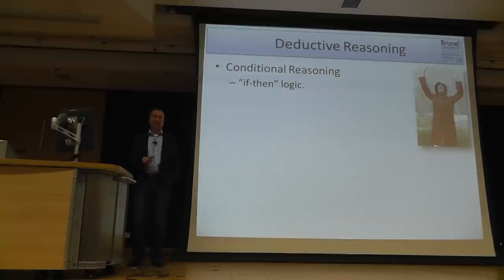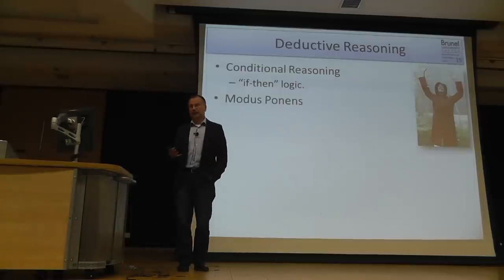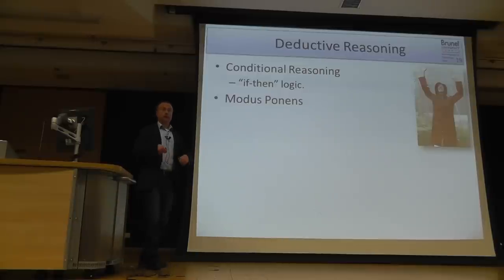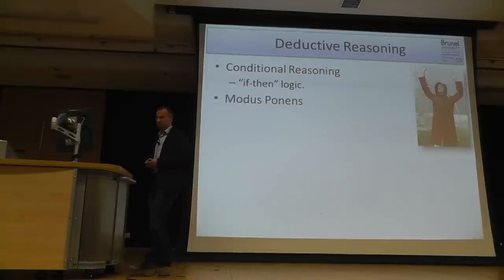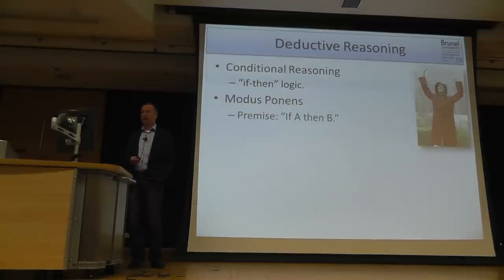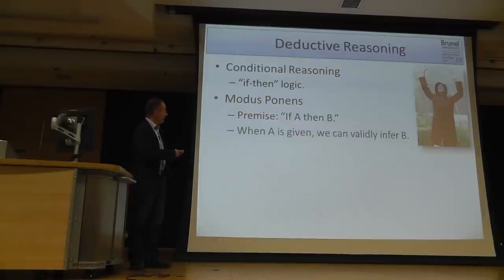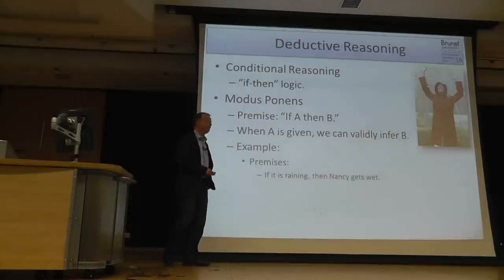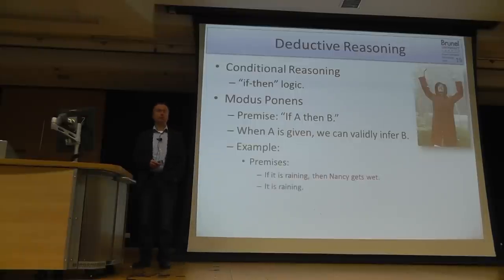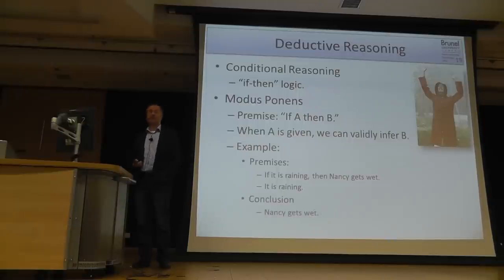Basically, what we are speaking about is an if-then logic. One type is called modus ponens, which is very simple and straightforward. The premise is: if A, then B. So when A is given, we can infer that B also holds. As an example: if it is raining, then Nancy gets wet. But it is raining. What can we infer? Nancy gets wet.